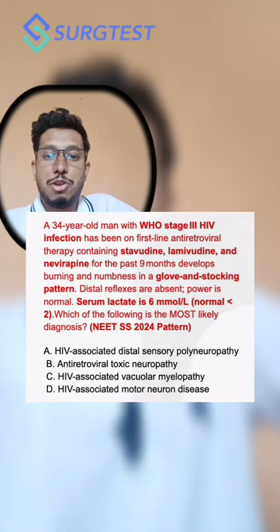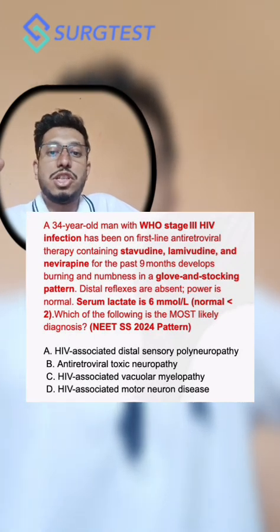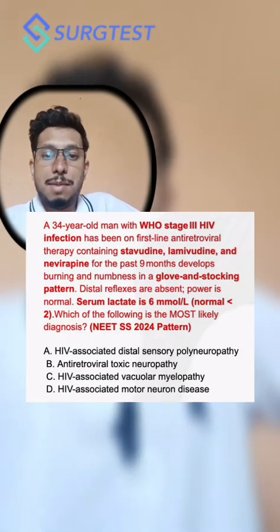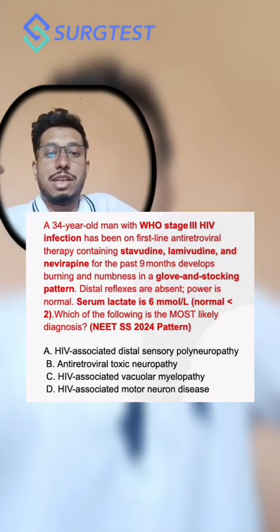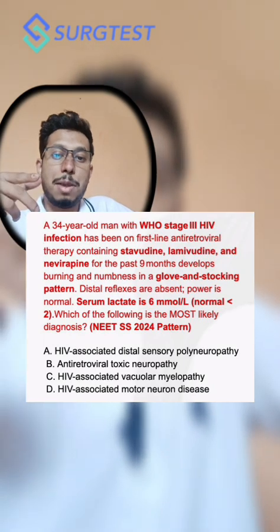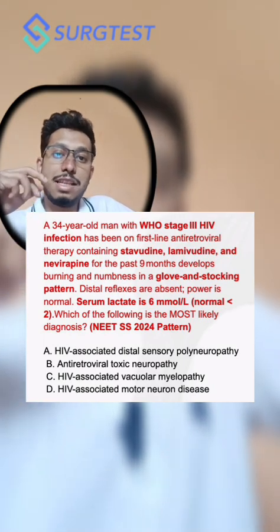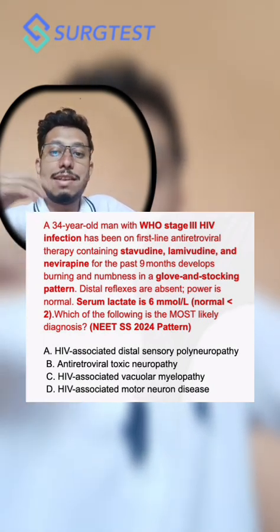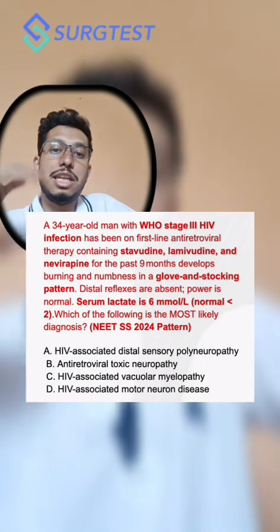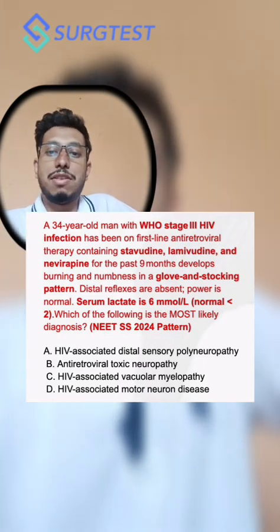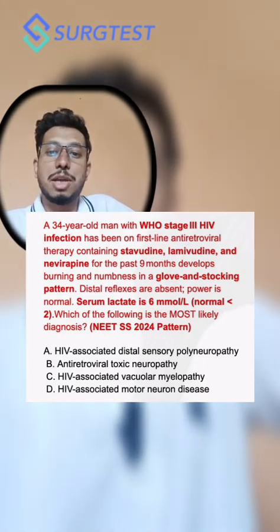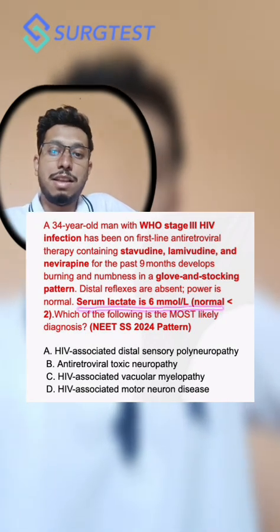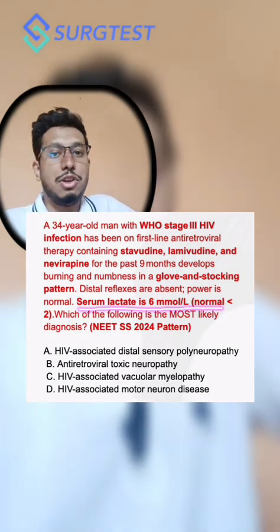This neuropathy usually starts after initiating lamivudine, and it is a mitochondrial toxic neuropathy. Because of mitochondrial damage, lactate levels rise in lamivudine-induced neuropathy. As stated in the question stem, the lactate level was rising — therefore the answer is toxic neuropathy.